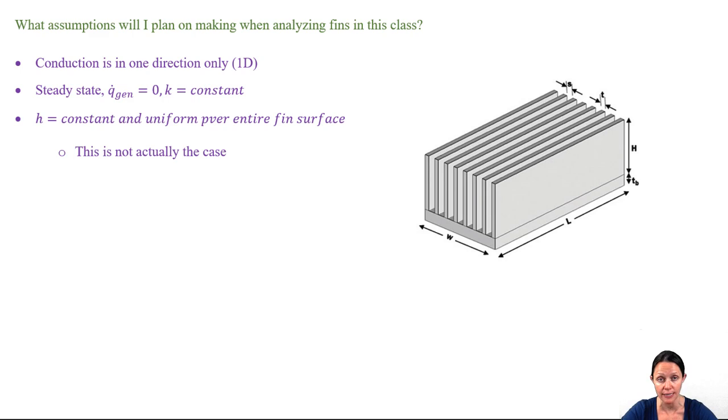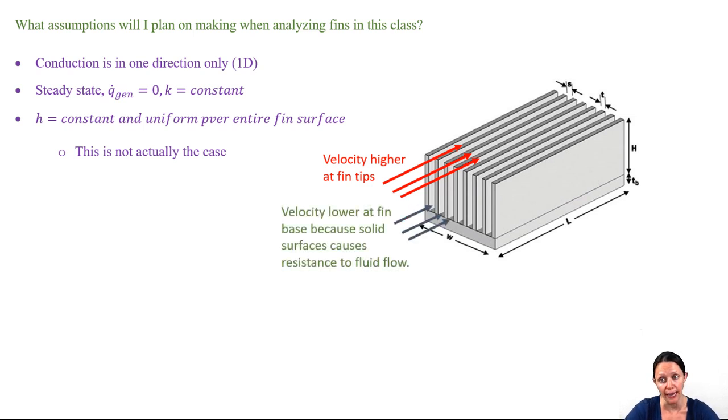Well, the higher the velocity, the higher the H value. So if we take an array of fins and a fluid passes through those fins to remove heat from the base at the bottom, the velocity at the fin tips will be higher than the velocity at the bottom near the base.